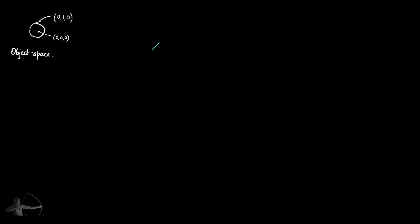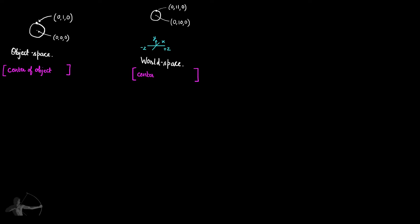When we bring this object into the world — where x is the x-axis, y is the up-axis, and z ranges from negative to positive — we place this object at 0, 10, 0, which is 10 units in the y-axis. So the position of the vertex in respect to the world becomes 0, 11, 0, because from object space it is at 0, 1, 0 and the object itself is at 0, 10, 0. This coordinate space is called world space, which is in regards to the center of the world.